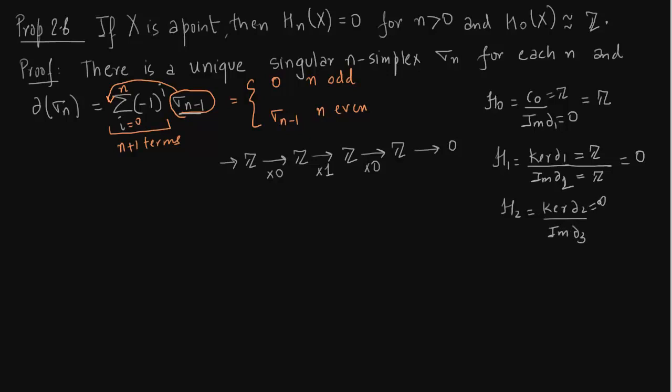What about H2? The numerator is 0, so this becomes 0. This is true for all odd cases. Take the argument of H1 and extend it for all odd cases, and you can extend the second argument for all even cases.